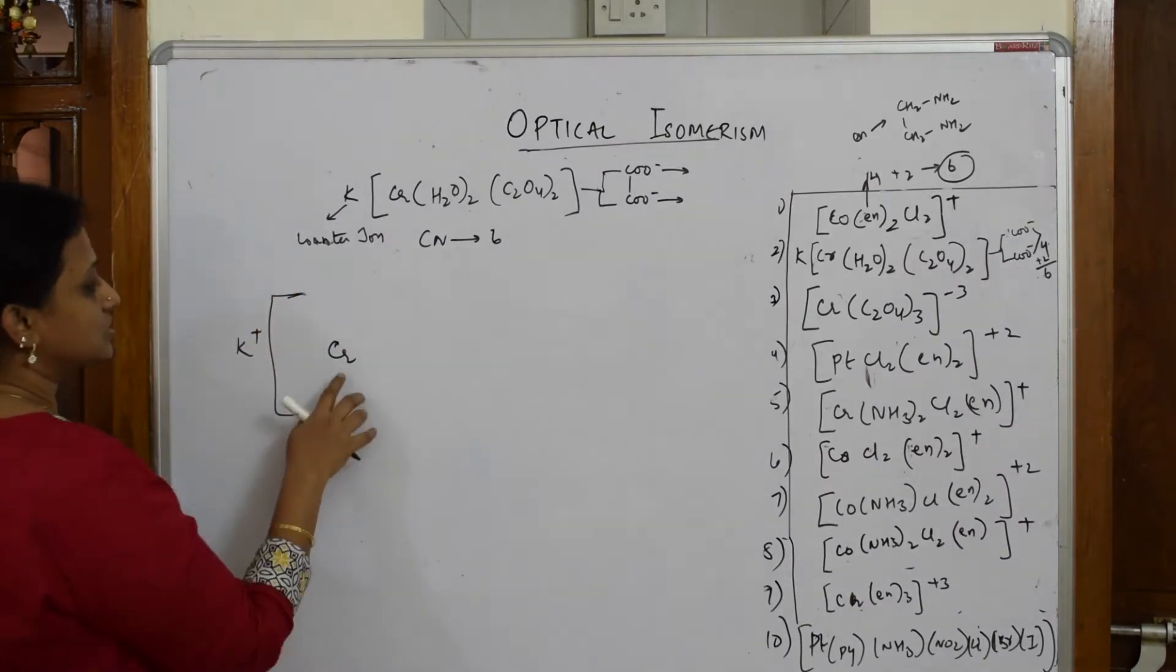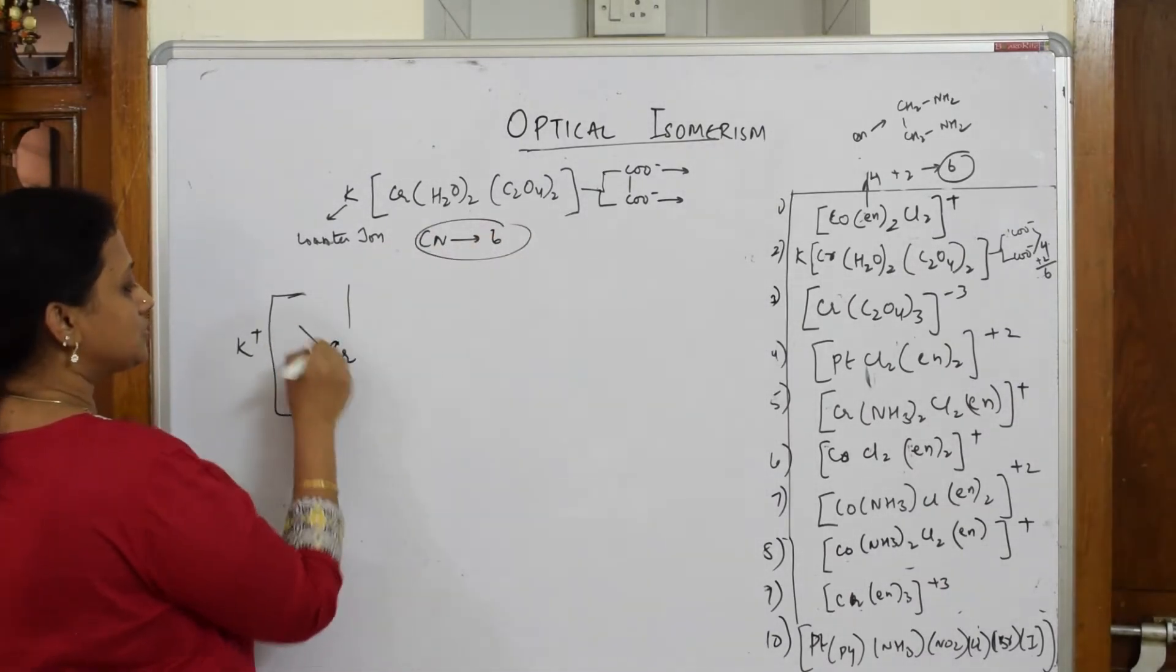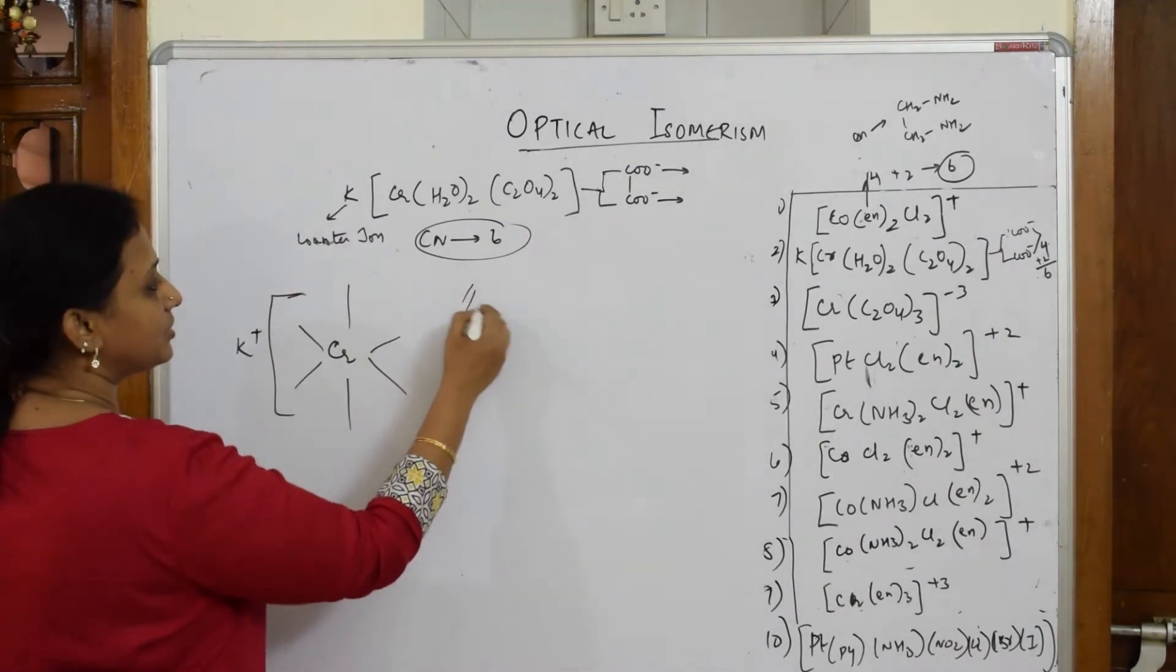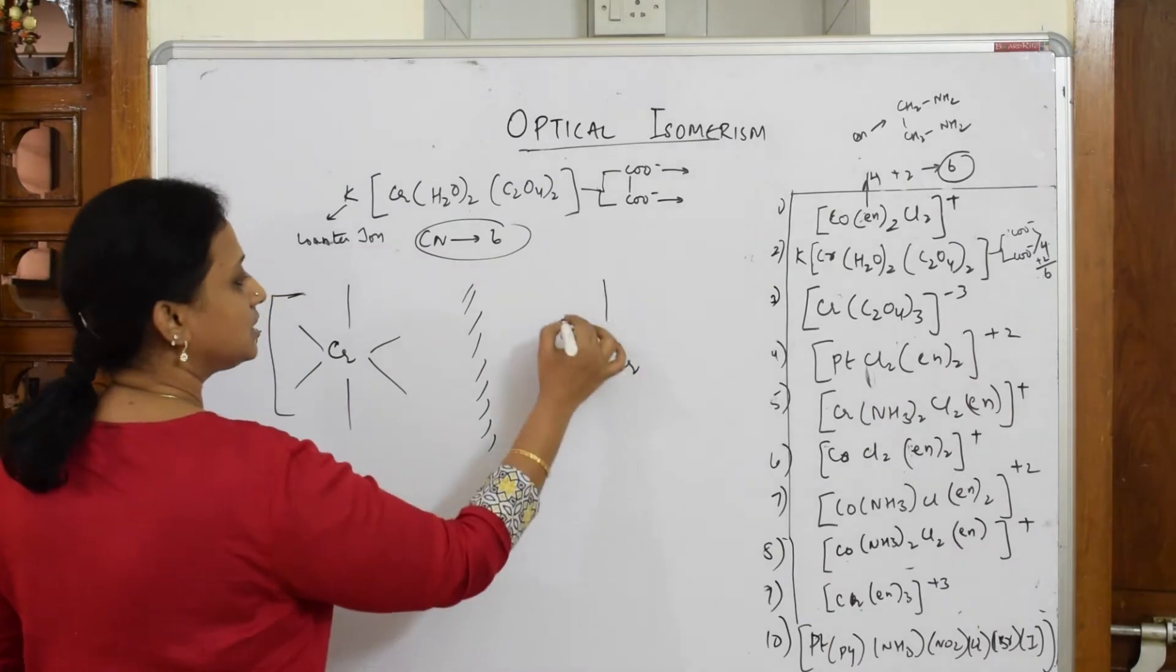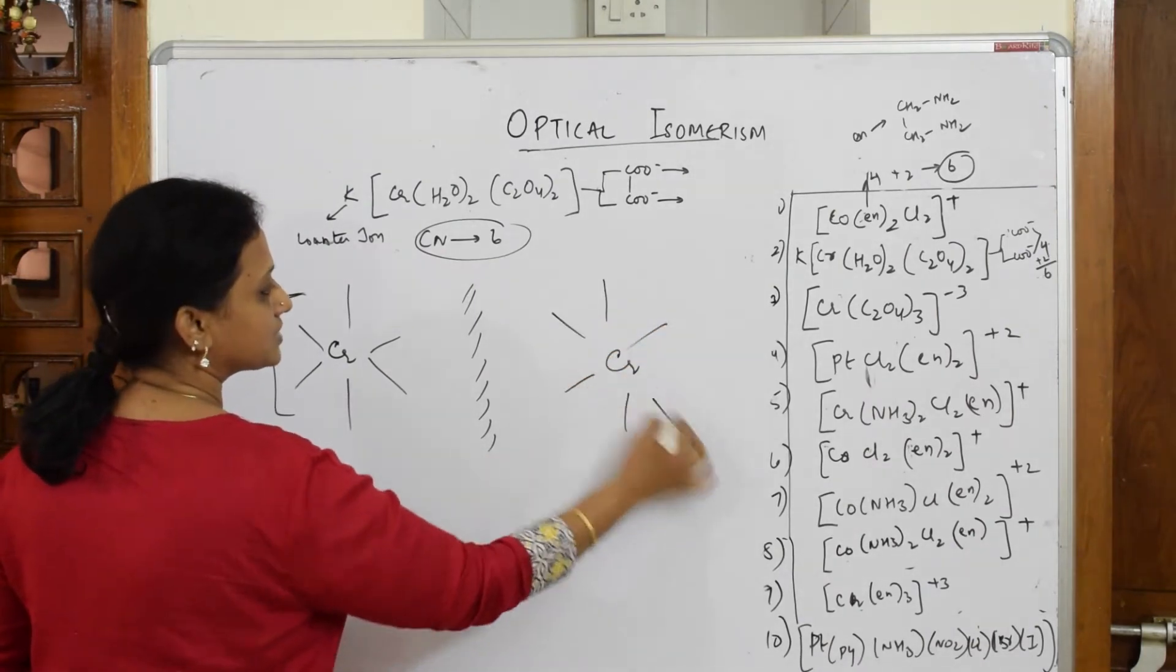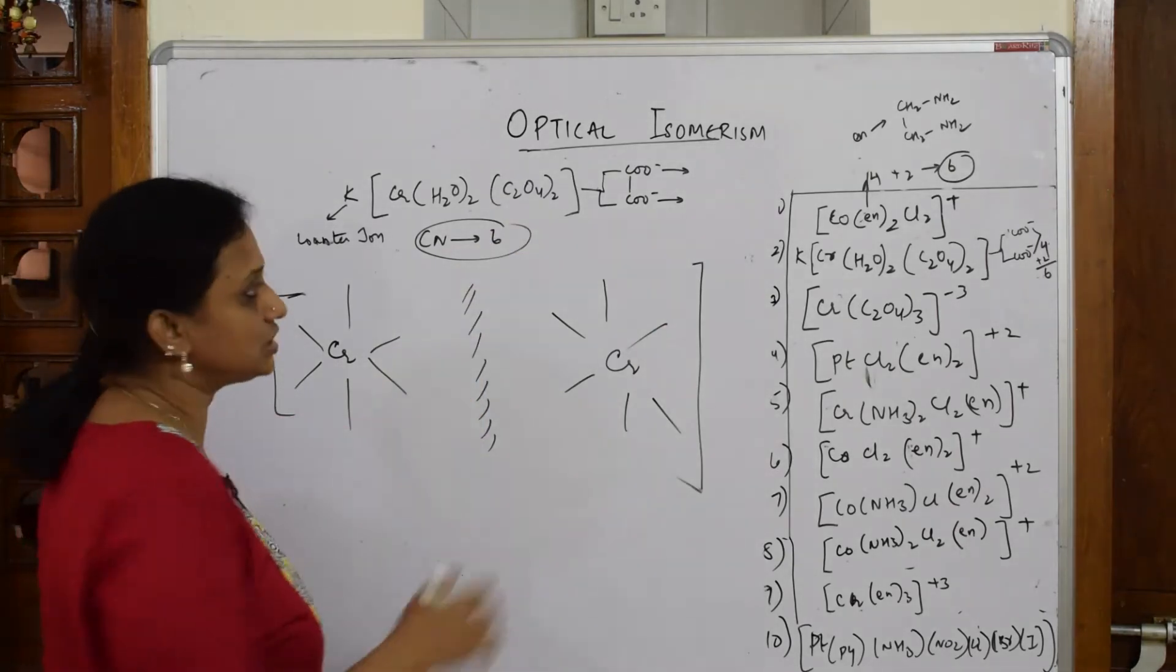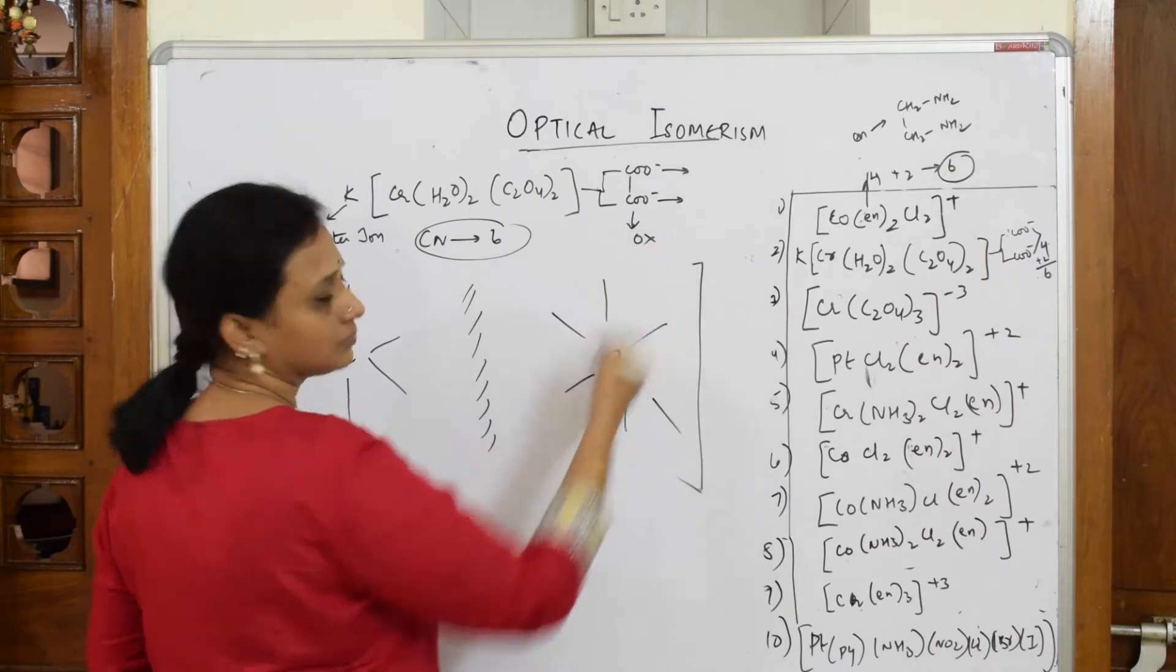Cr is in the center, so draw six bonds because I already got coordination number six: one, two, three, four, five, six. Now I have to draw the mirror image of this particular one. Again draw Cr, one, two, three, four, five, six.